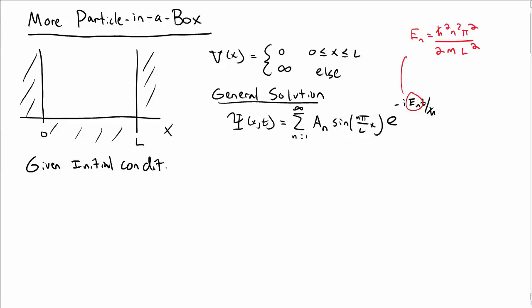But another question we might ask is, if we were given the initial conditions for capital psi at x, 0, what are the a sub n's, these constant coefficients in the general solution?